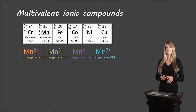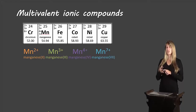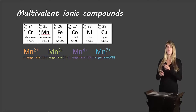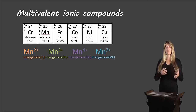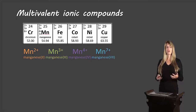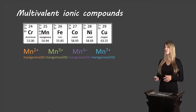If we look at manganese, it can actually have a 2+ charge, a 3+ charge, a 4+ charge, or a 7+ charge — all of those are possibilities. So when we make compounds, we need to know which one of those ions we're working with, and when we name the compounds, we need to include that information.